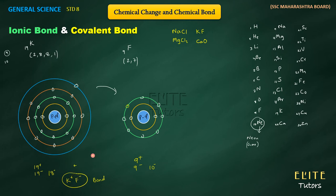And so we call this compound KF an ionic compound. The diagram shows the electron transfer from potassium to fluorine, with an arrow indicating the direction of electron donation and acceptance. This completes the potassium fluoride example.